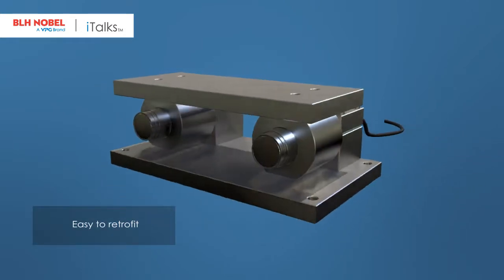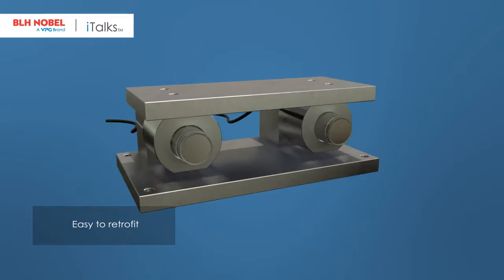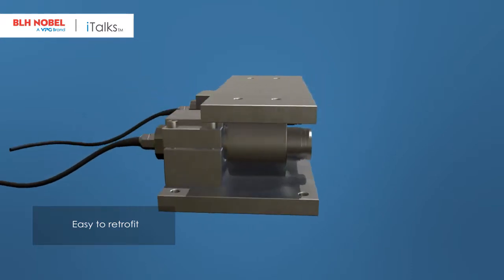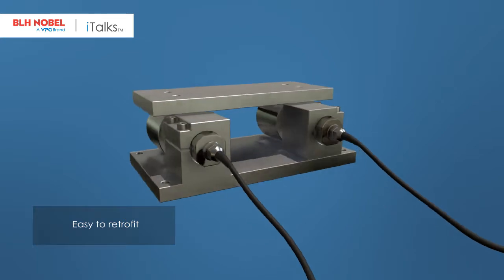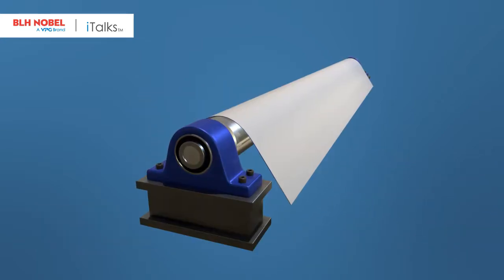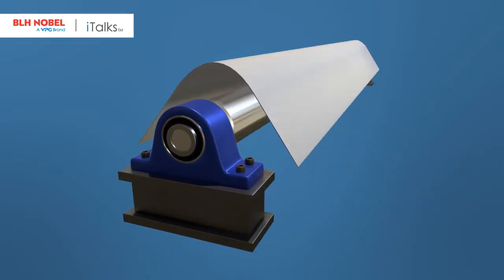The FMU can easily replace any existing web tension unit in the marketplace. The unit can be tailored to match existing mechanical designs of the bearing house and has no need for extra mounting plates.